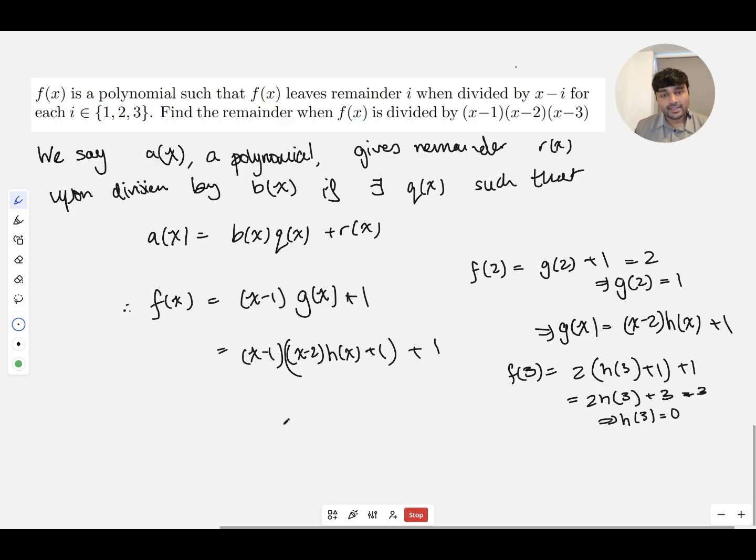And so therefore, h of x is just going to be, using the remainder theorem or the factor theorem, h of x is just going to be (x minus 3) times some other polynomial. So this is going to be (x minus 1) times (x minus 2) times (x minus 3) times some function j of x, plus 1, plus 1. And that's supposed to be a bigger bracket there.